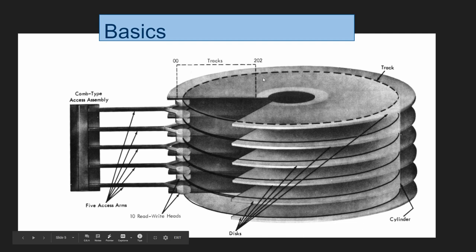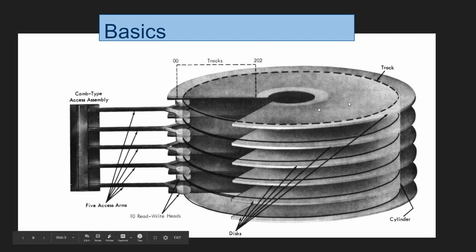On every platter there's a number of tracks — say 202 tracks — and each vertical set of tracks at the same position across all platters together makes up one cylinder. So tracks are the circular tracks on the disk, and a cylinder is a collection of those tracks across all platters.